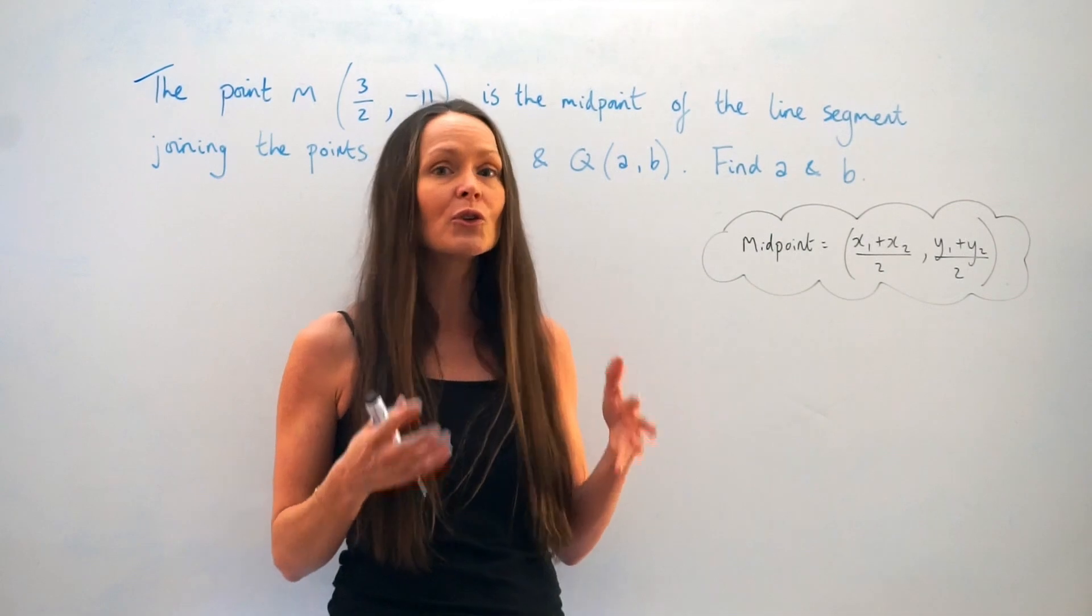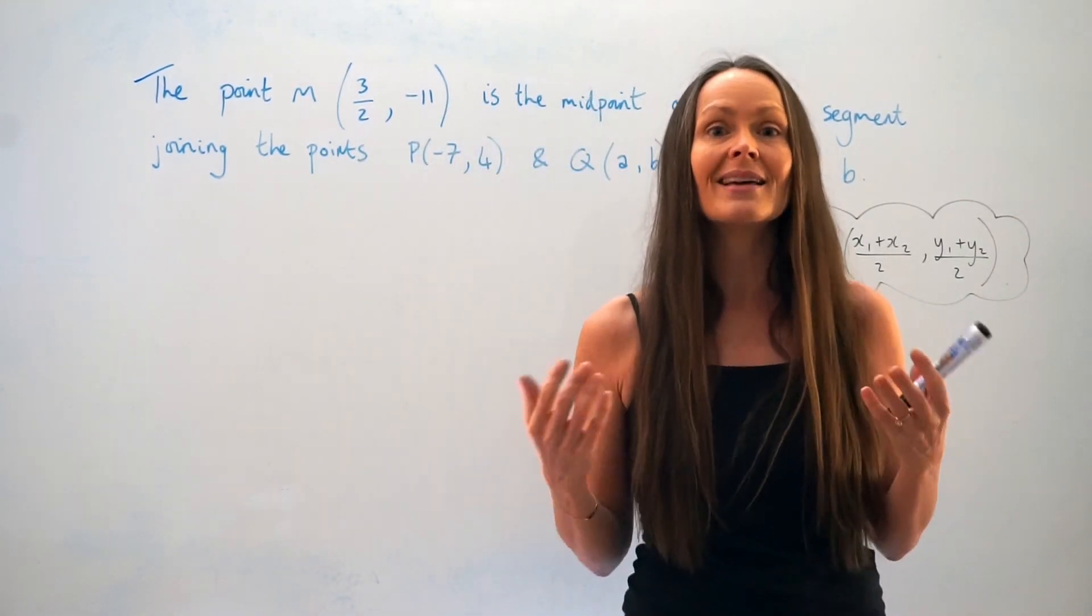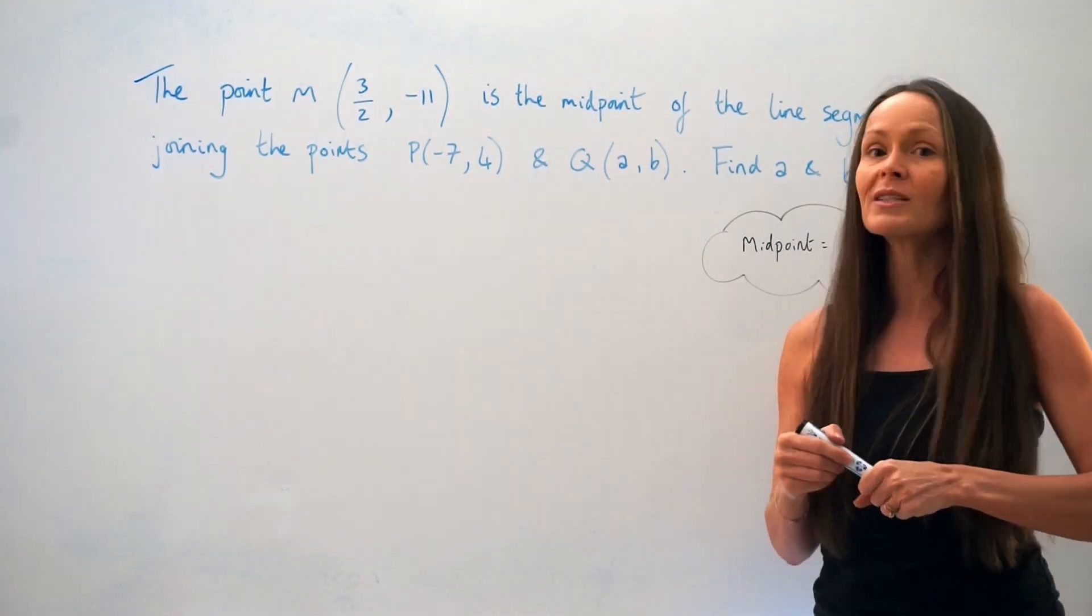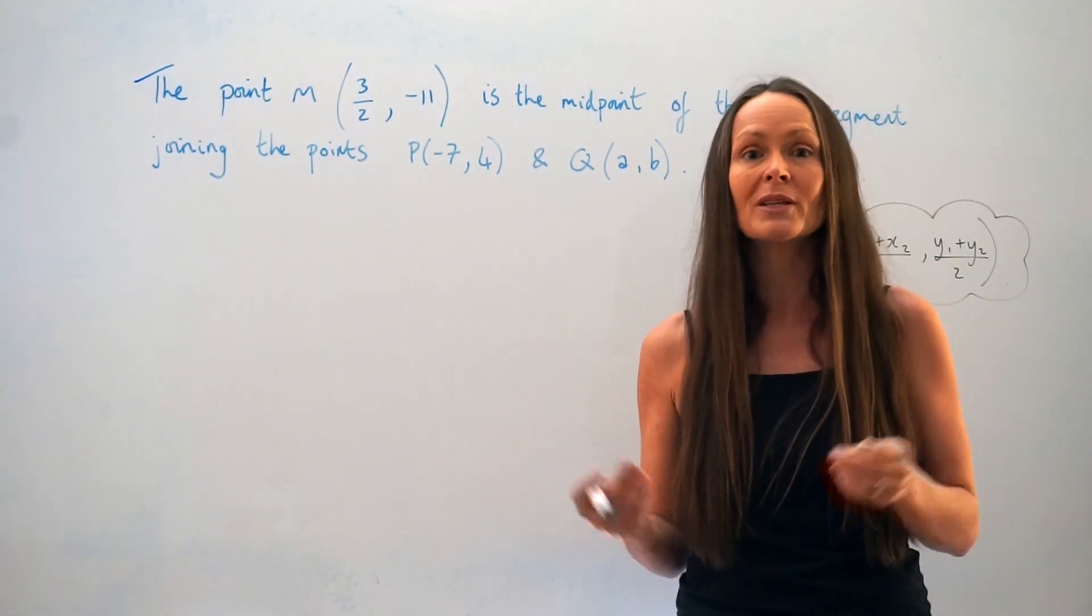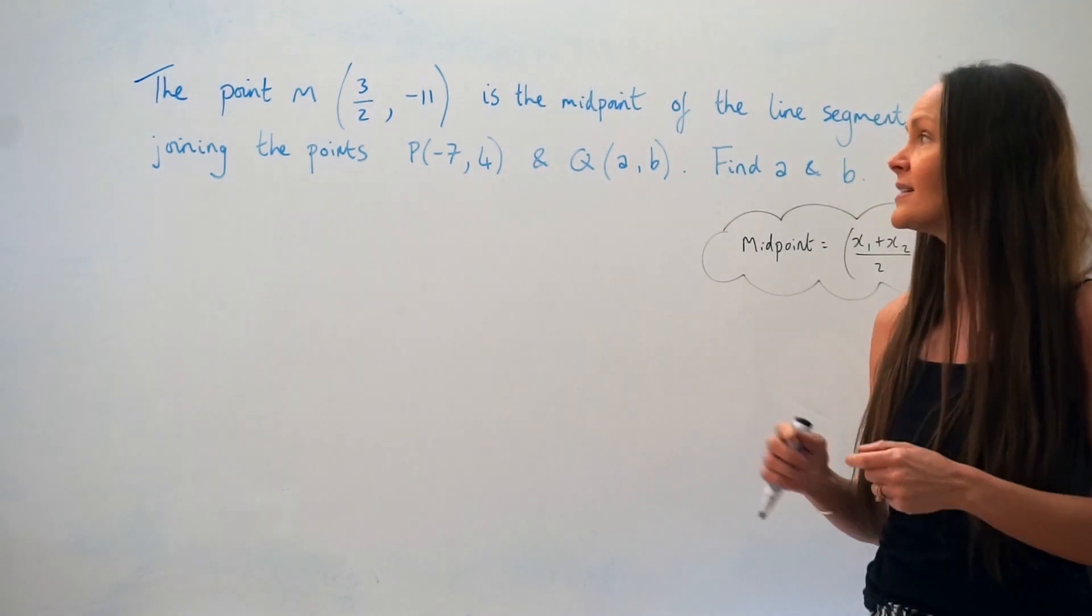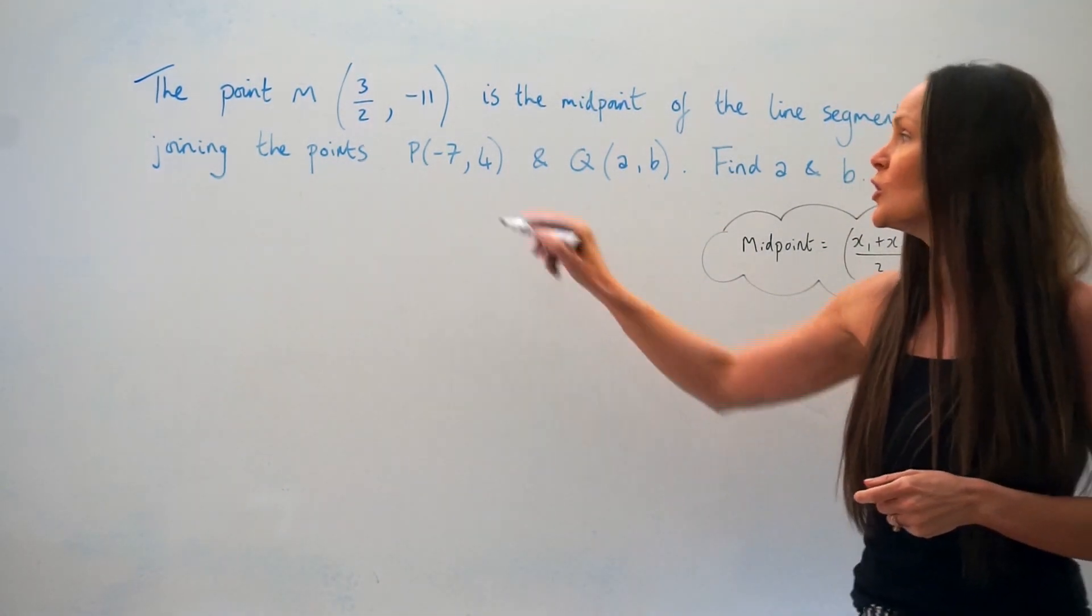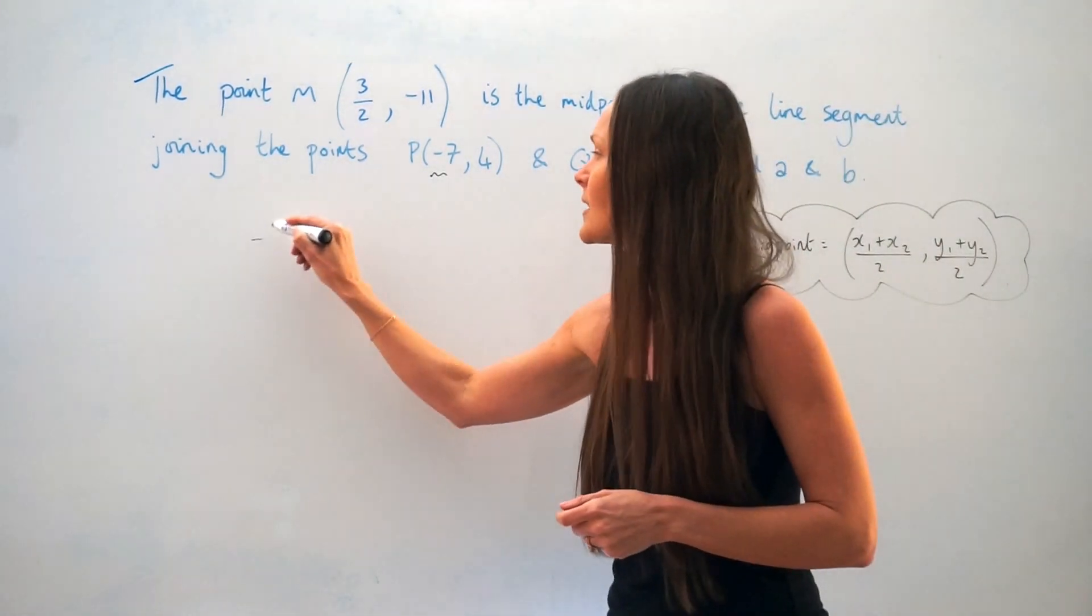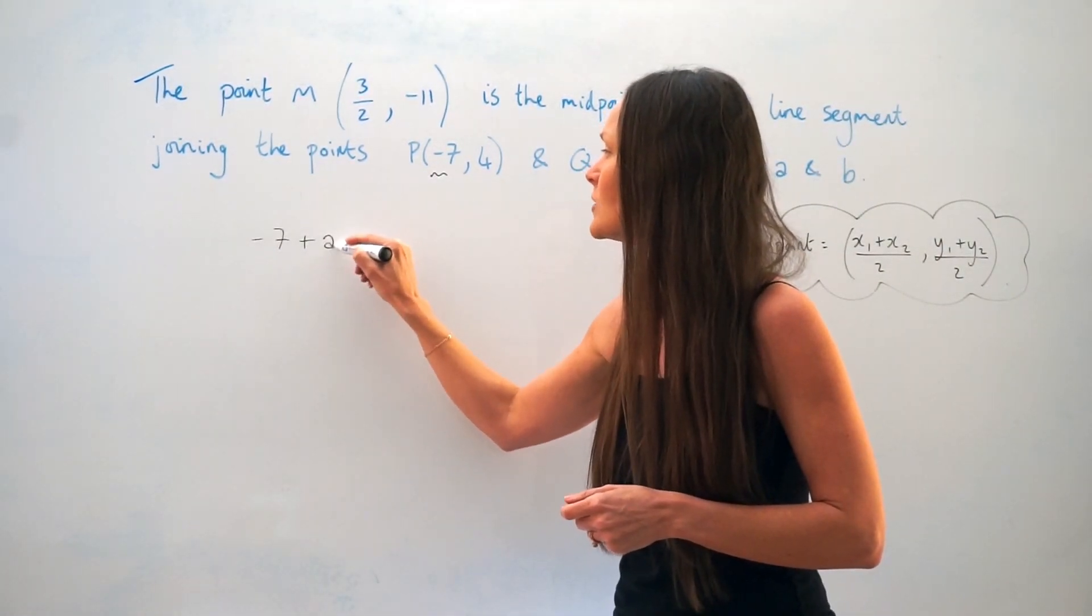So we're going to use that idea to form an equation that we can then solve to find the values of A and B. So let's pretend we were trying to calculate the midpoint of the line segment joining P and Q. You would take the two x values here, negative 7 and A, add them together and then divide by 2.